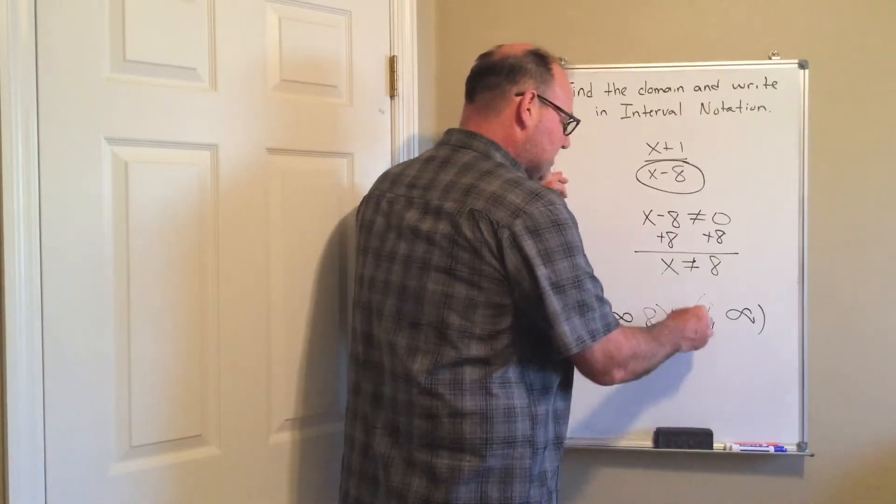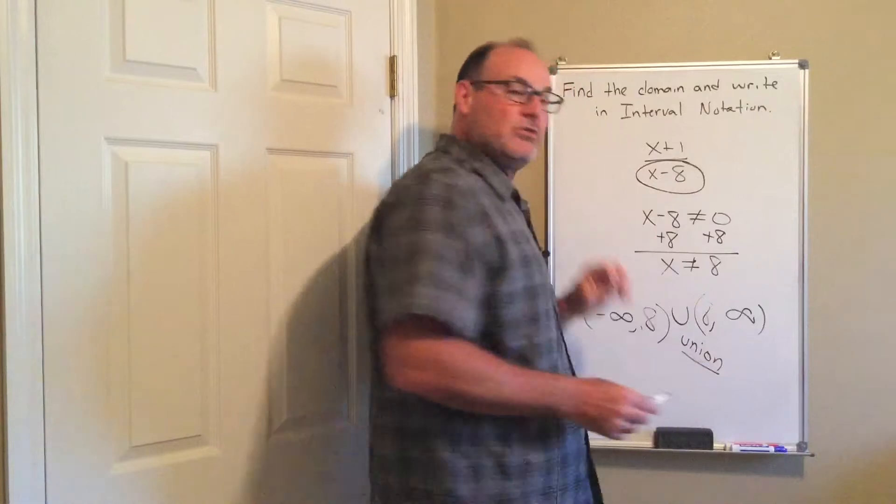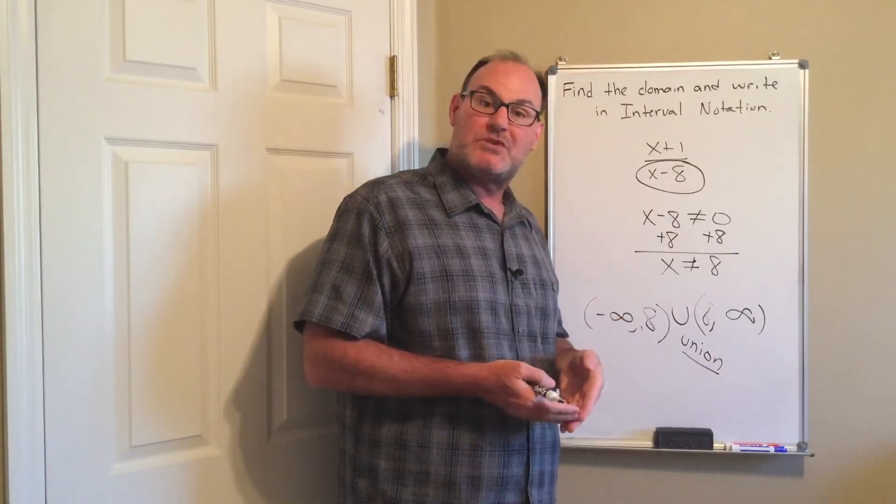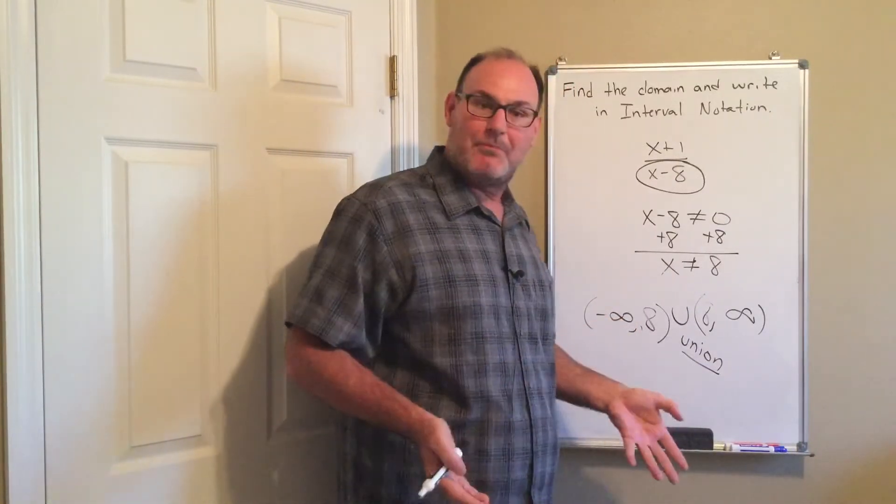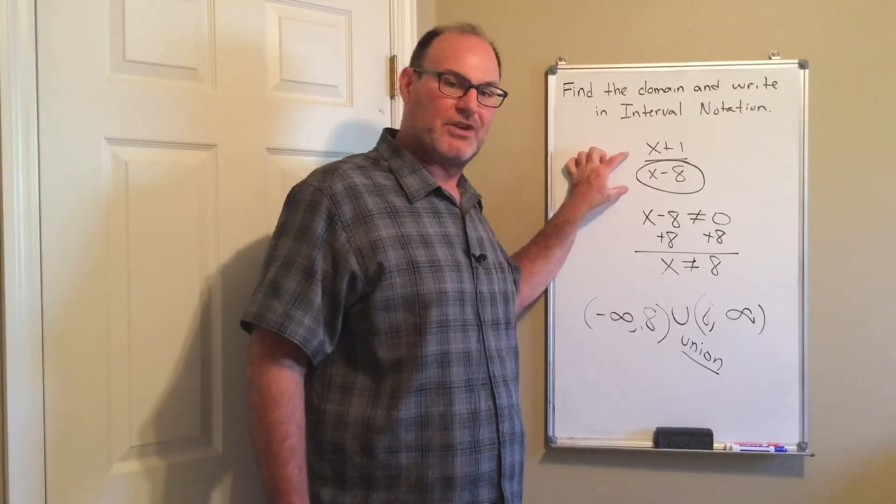I'm gonna put a union symbol right here. That U stands for union and union means I am joining those two sets together to make one bigger set. So this is the domain of this rational expression.